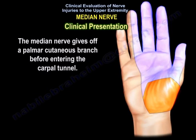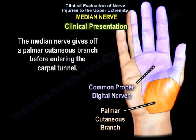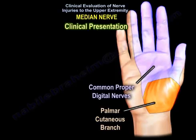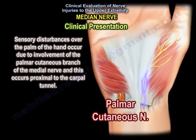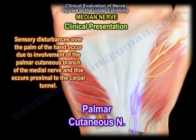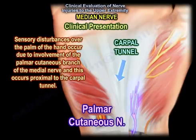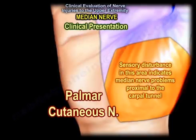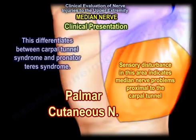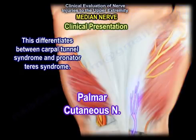The median nerve gives off a palmar cutaneous branch before entering the carpal tunnel. So sensory disturbances over the palm of the hand occur due to involvement of the palmar cutaneous branch of the median nerve, proximal to the carpal tunnel itself. Sensory disturbance in this area indicates median nerve problems proximal to the carpal tunnel, and this differentiates between carpal tunnel syndrome and pronator teres syndrome — an important point.